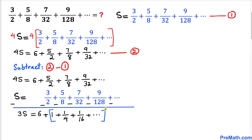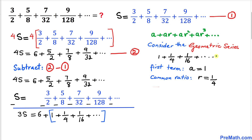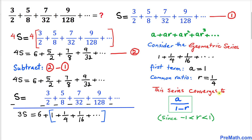Now let's focus on this part of the series: 1 plus 1 over 4 plus 1 over 16, and on and on. This is a geometric series of the form a plus ar plus ar squared plus ar cubed and so on, where a is the first term and r is the common ratio. Here, a equals 1 and r equals 1 over 4. This series converges to a over 1 minus r, since r is between negative 1 and positive 1.